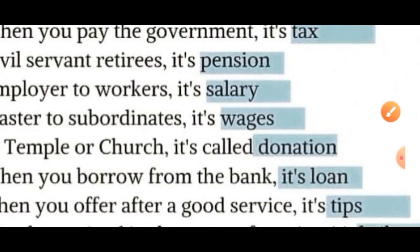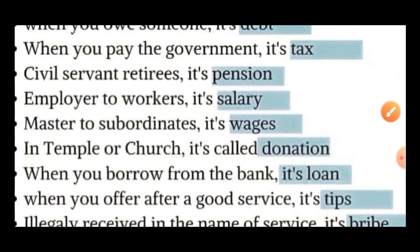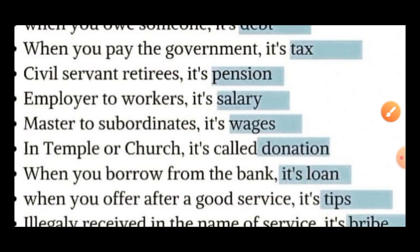Then next one is wages. Wages means master to servant — matlab kisi malik ke andar koi kaam kar raha hai aur wo malik unko paise de rahe hain, to usko kaha jata hai wages. Wages ka Hindi hai mazdoori — matlab koi apne malik ke andar kaam kar raha hai aur use weekly ya monthly paise le raha hai, to usko mazdoori kaha jaega.